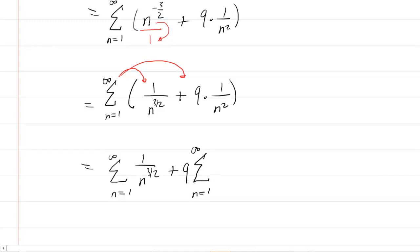These are both in p-series form because they are both written as 1 over n raised to the power of p.